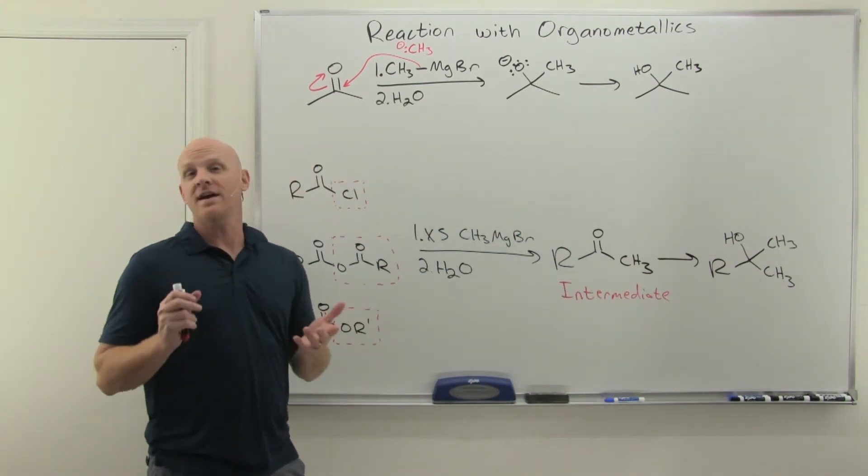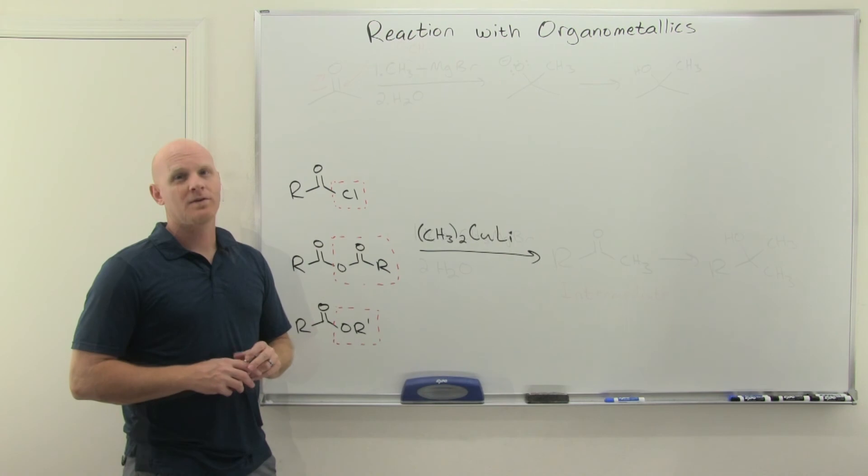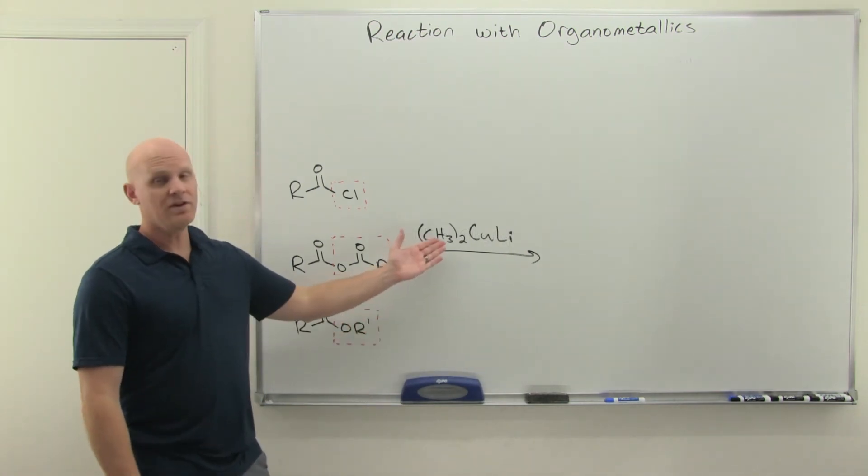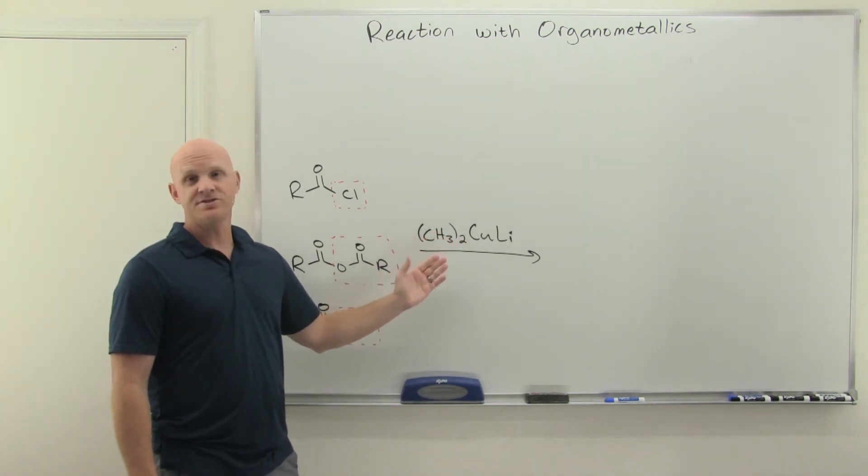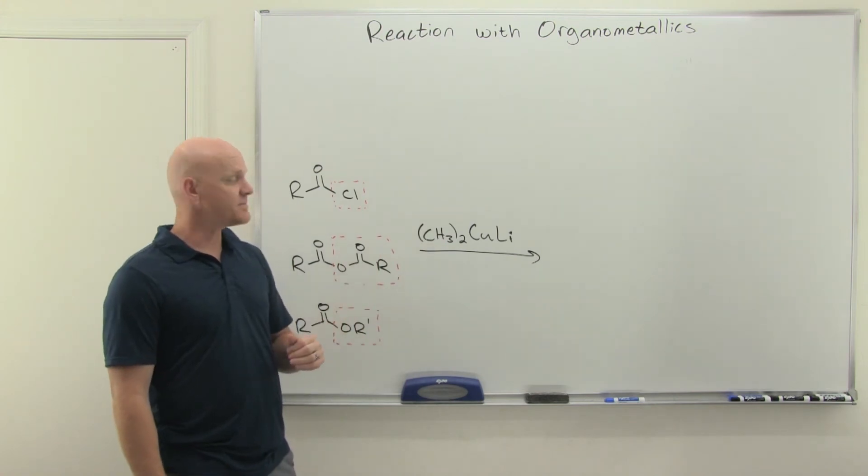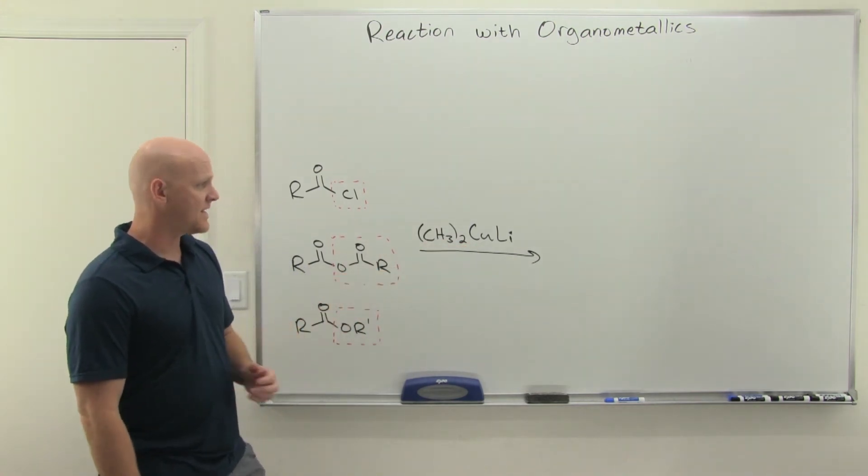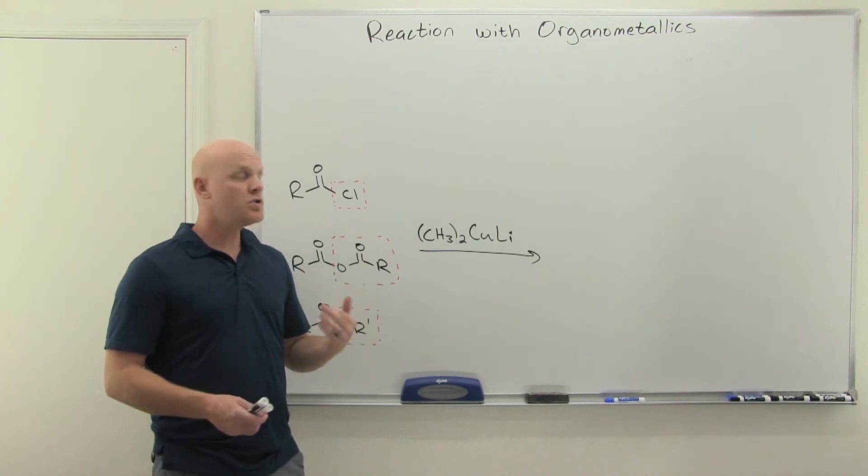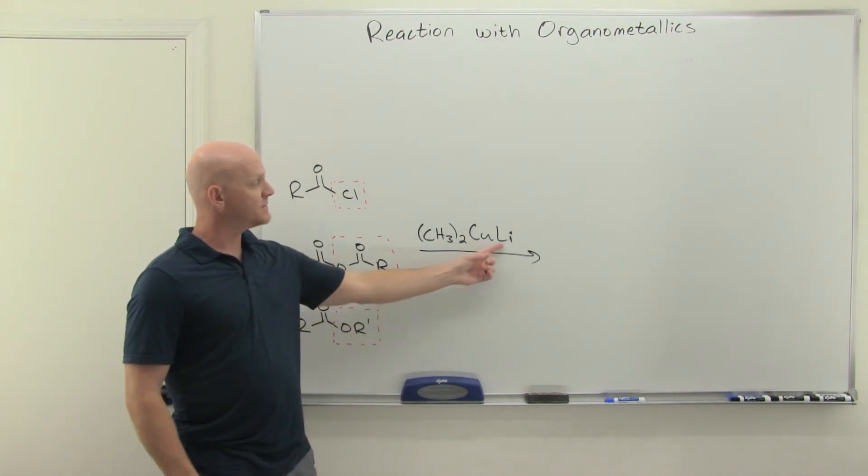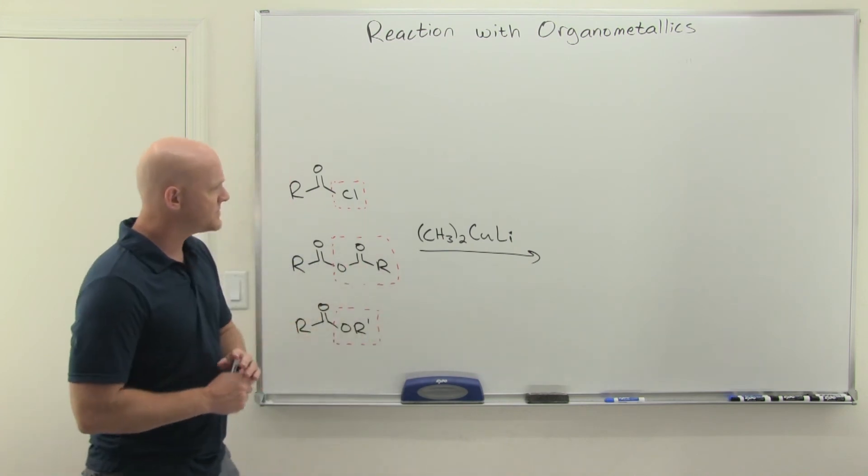So let's take a look at how this would be different with a Gilman reagent. So now we'll take a look at the reaction with a Gilman reagent here, and your Gilman reagents are organocuprates now, and so instead of magnesium, we have a copper as the metal in the organometallic. And in addition to being called organocuprates, some people get a little more specific, and they call them lithium dialkyl cuprates. Same diff. So those are your Gilman reagents here.